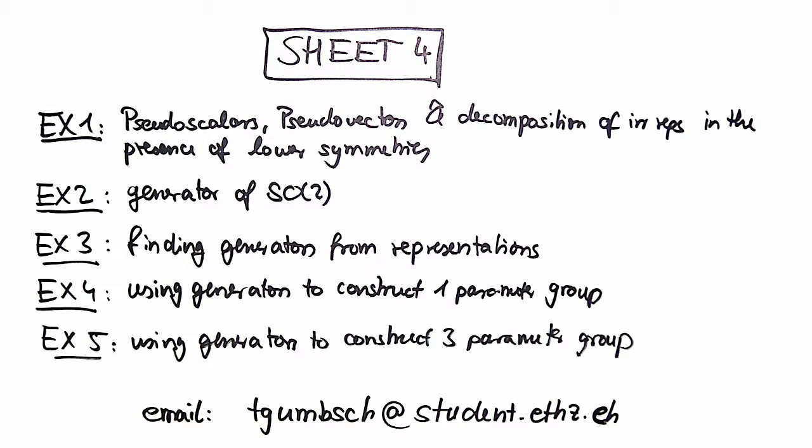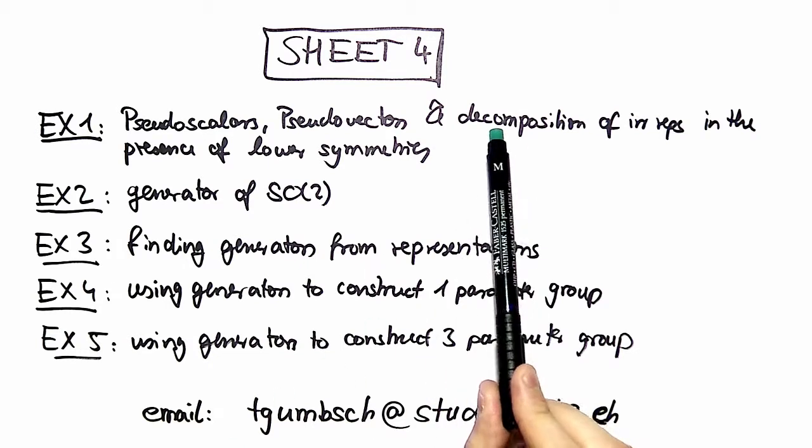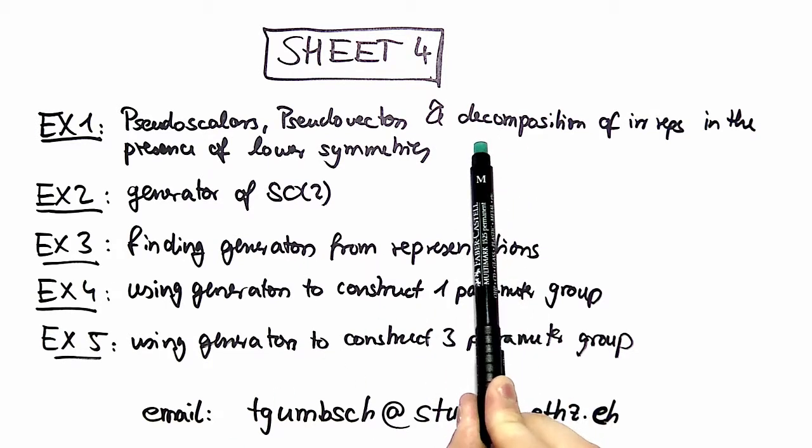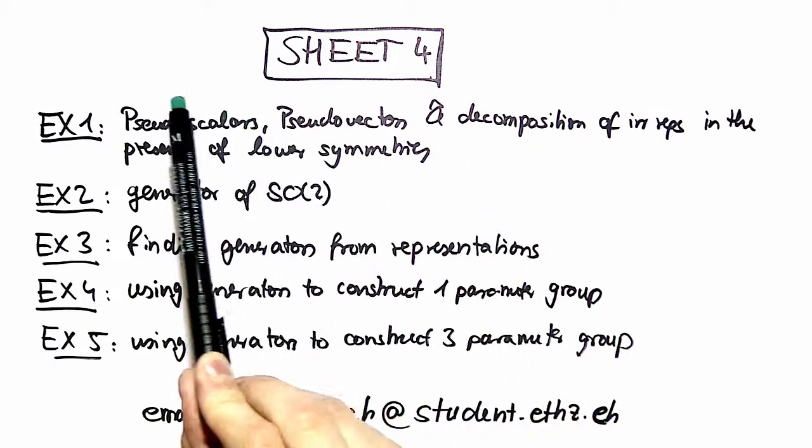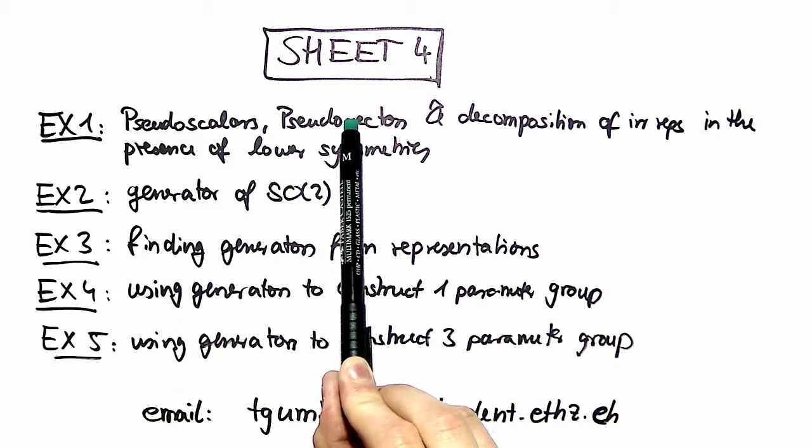In exercise sheet number 4 we basically covered two different topics. The first topic is the decomposition of irreducible representations in the presence of lower symmetries, and in the course of that we also investigate pseudoscalars and pseudovectors.